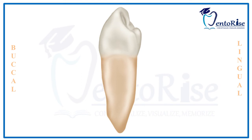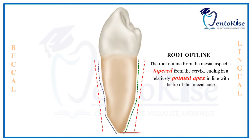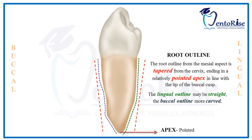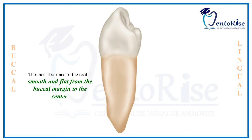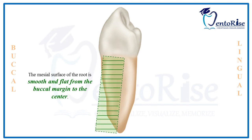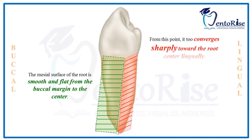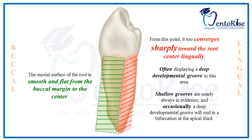Discussing the root: both buccally and lingually, the outlines taper from the cervical line to end in a pointed apex. The buccal outline is curved and the lingual outline is relatively straight. The mesial surface of the root is smooth and flat from the buccal margin to the center — depicted in green — and from the center towards the lingual margin, the root converges sharply. Often, there is a deep developmental groove in this area, and occasionally, shallow developmental grooves are also present.